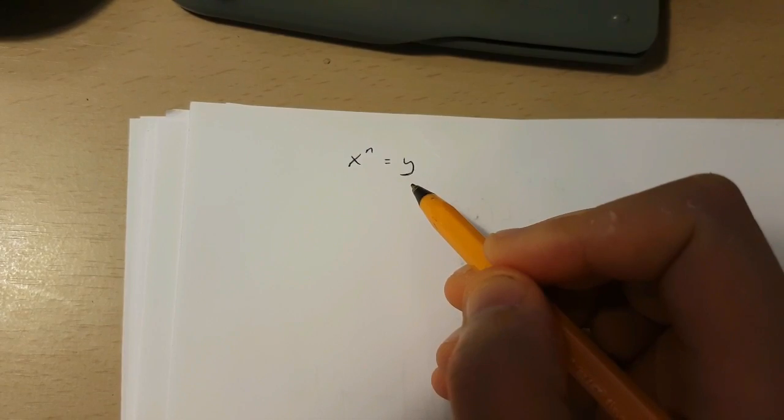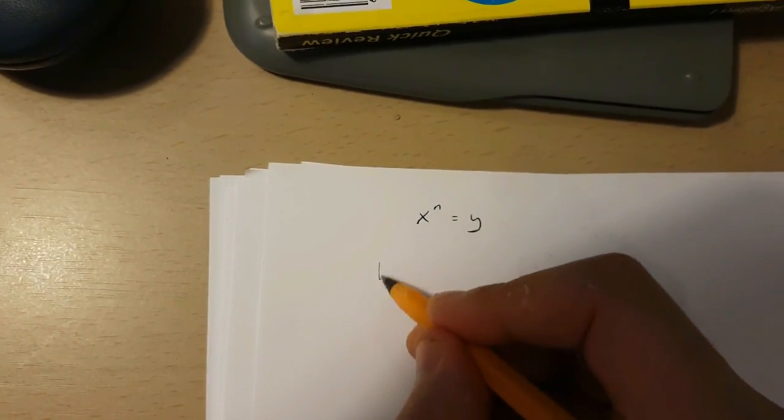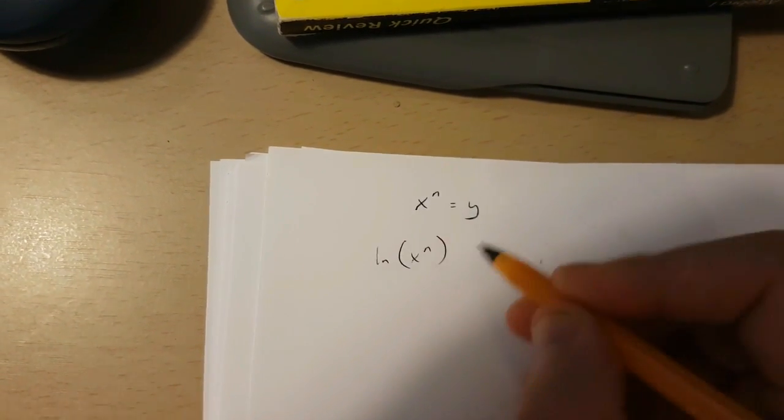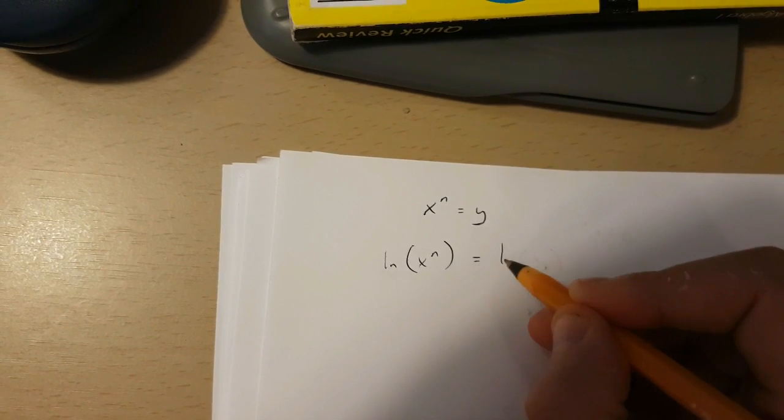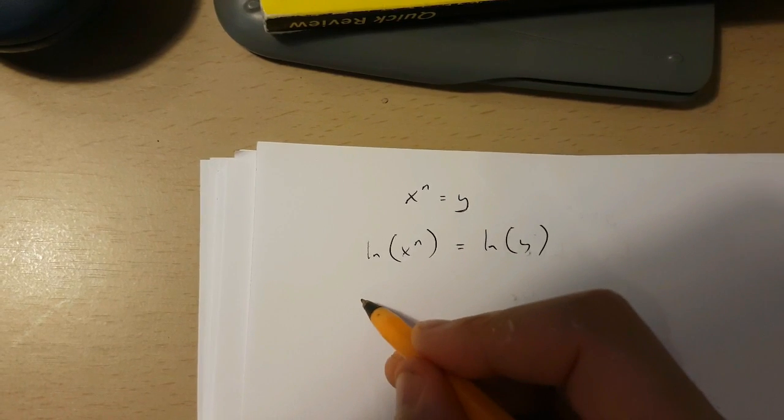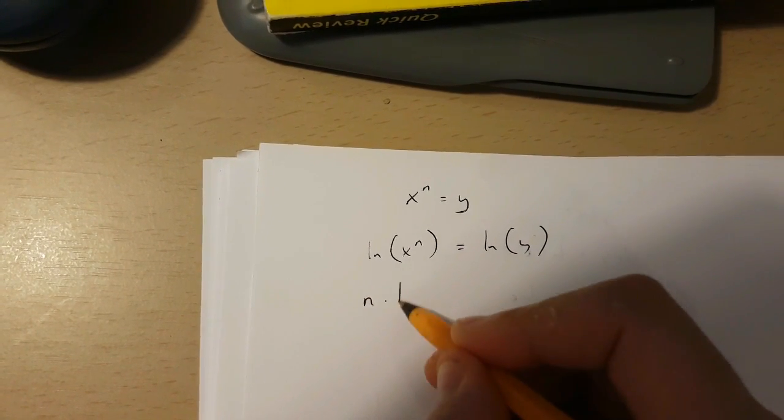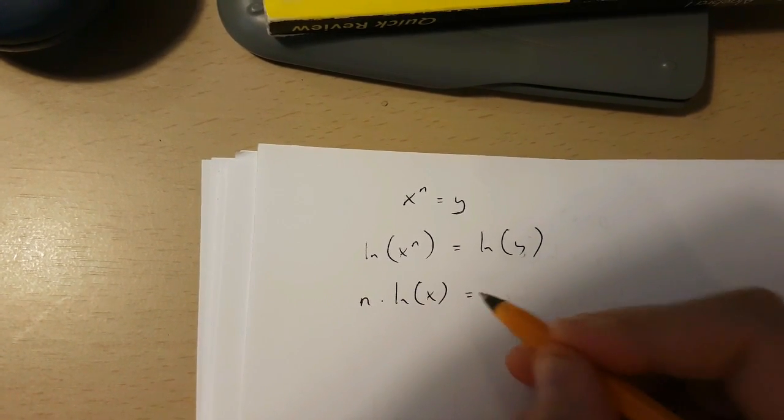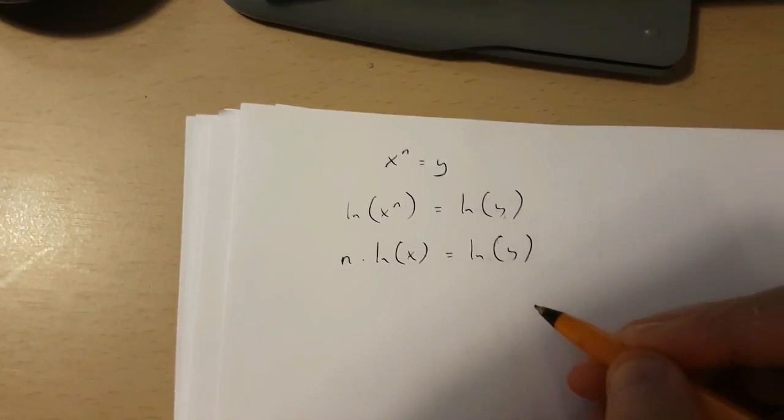I'm going to transform this equation into ln x to the power of n is equal to ln y. Now because of logarithmic rules, this is in fact n times ln x equals ln y.